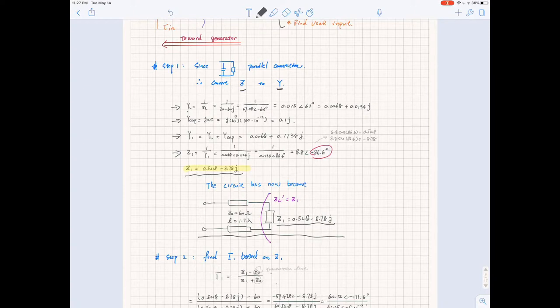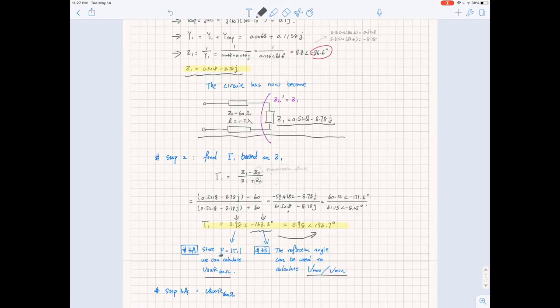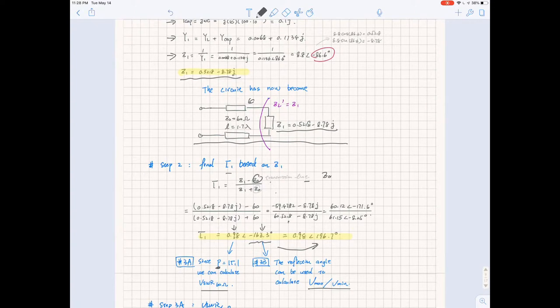The second step is to find out what gamma 1 is. Gamma 1 is basically the reflection that we get at this point. We can just plug it into the equations for calculating gamma, and keep in mind that Z0 here is the characteristic impedance for the transmission line. The reason to do that is that we're always looking at the left side and find out what the closest Z0 would be, and in this case it would be the characteristic impedance of the 60 ohm transmission line.